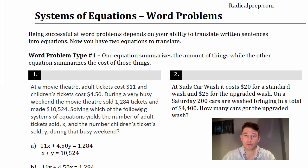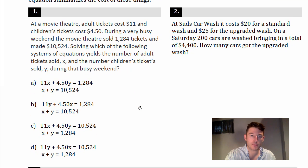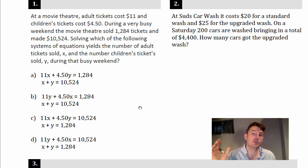So let's dive right in and check it out in number one here. And again, you can follow along at home because you can download the PDF I have in the window, it's all free. At a movie theater, adult tickets cost $11 and children's tickets cost $4.50. During a very busy weekend, the movie theater sold 1,284 tickets and made $10,524.